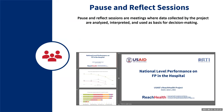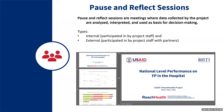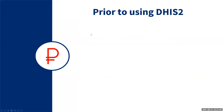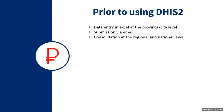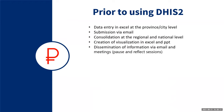To improve program effectiveness, REACH Health utilizes the MERLA approach — the intentional application of results-focused monitoring, evaluation, and research to inform continuous learning and adaptive management for improving program effectiveness and policy decision making. One key implementation of MERLA is Pause and Reflect sessions — meetings where project data is analyzed, interpreted, and used as basis for decisions. Prior to DHIS2, the project used Excel and PowerPoint, submitting data by email for regional consolidation, a tedious fragmented process using different tools for collection, consolidation, analysis, and visualization.